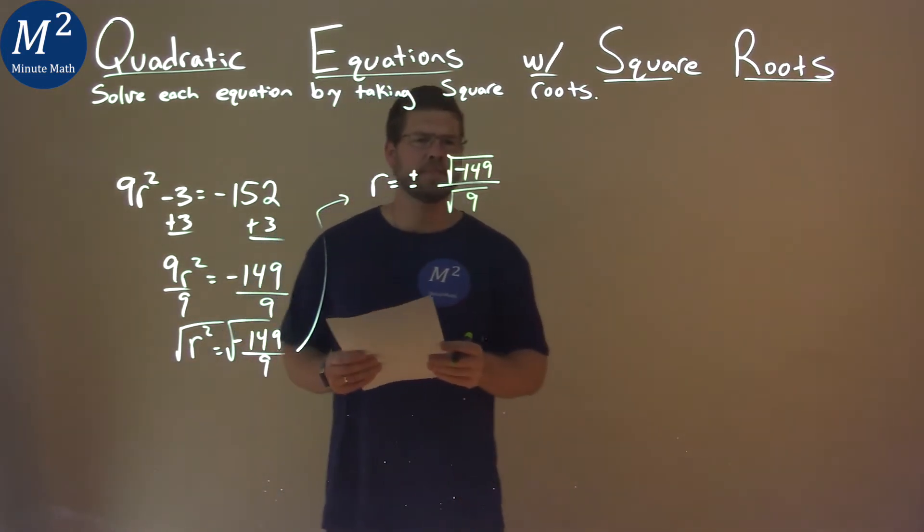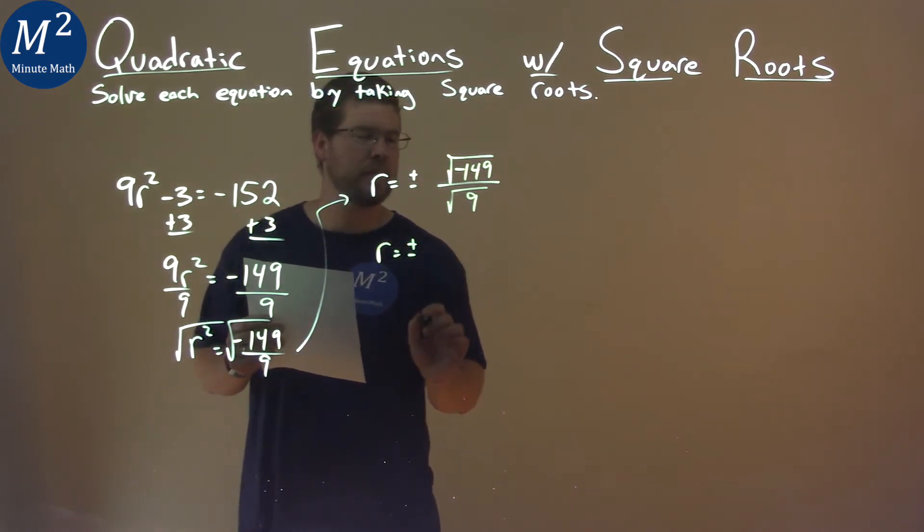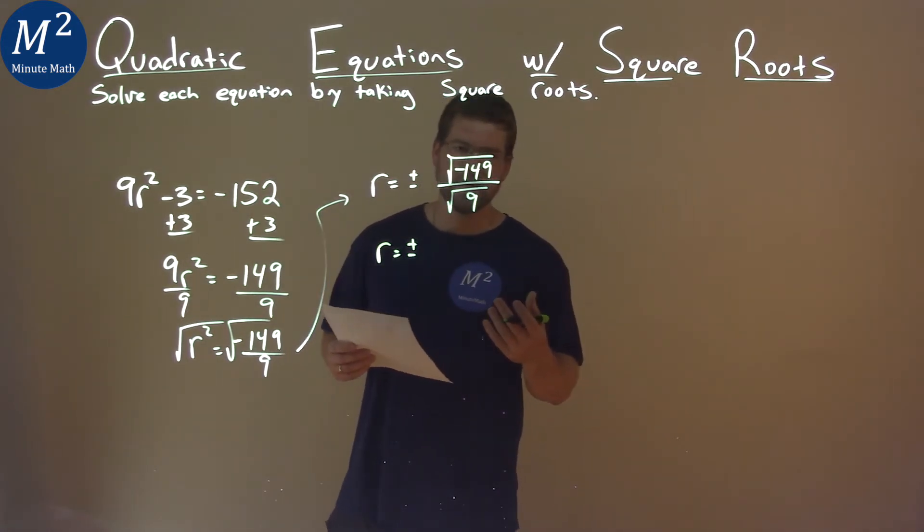Breaking this down a little more, r equals plus or minus here. We can't take a square root of a negative, so we're going to have an imaginary number here, okay?